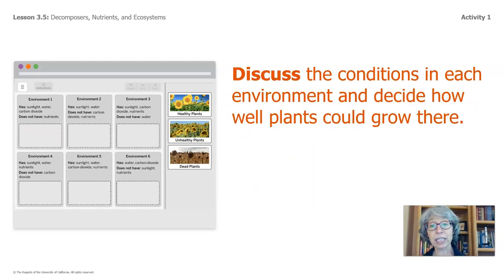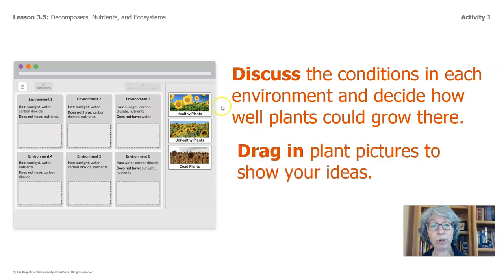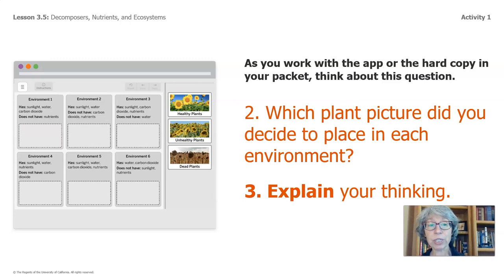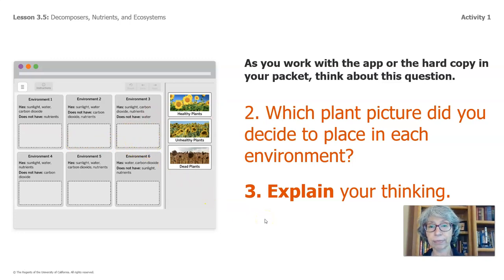I'd like you to discuss the conditions in each environment and decide how well the plants could grow there. On the app, you can drag these pictures into the different environments. If you don't have the app and you're using your packet, you can cut the different plant pictures out and place them in the environments. Think about this question: which plant picture did you decide to place in each environment, and what is your thinking? Why did you put them in the different places? Pause the video and work on this, and I'll see you in a bit.